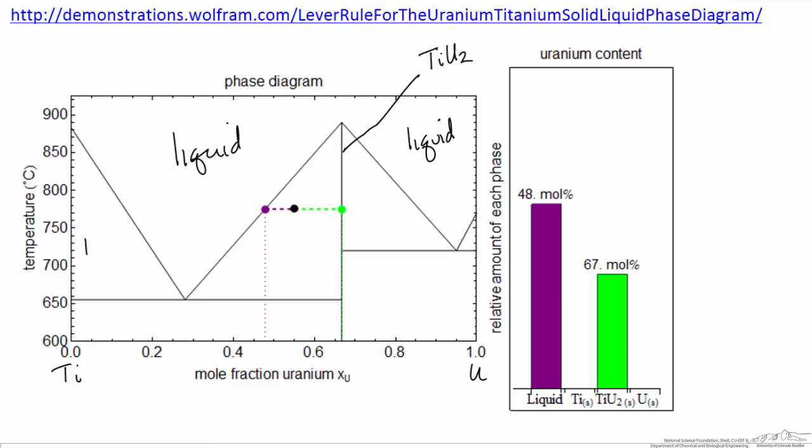The region here consists of titanium plus liquid in equilibrium. And likewise the region here consists of the stoichiometric compound plus liquid in equilibrium, as does this region. And this small region consists of uranium plus liquid in equilibrium. So these regions are all two phases.